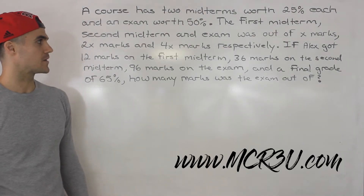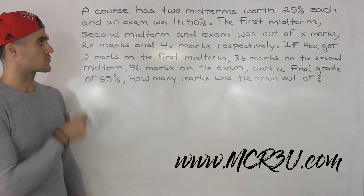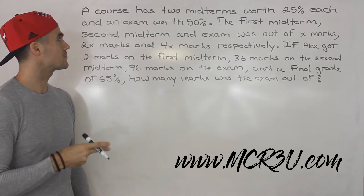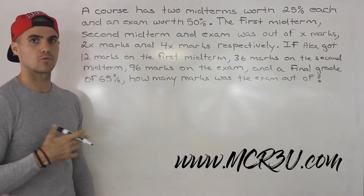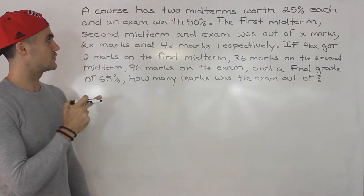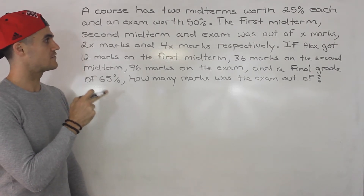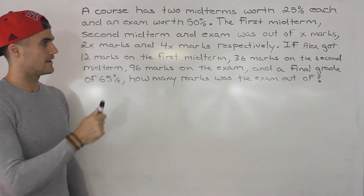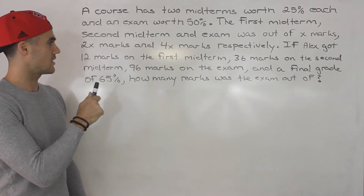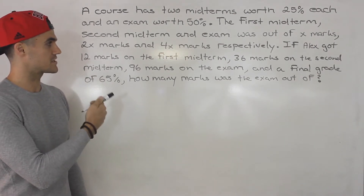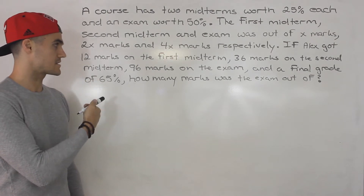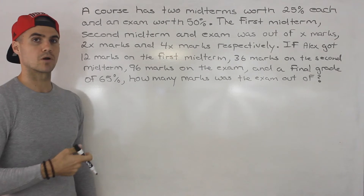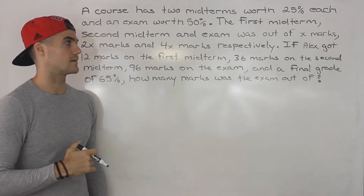Welcome back. Moving on with rational expressions, we have this word problem to solve. A course has two midterms worth 25% each and an exam worth 50%. The first midterm, second midterm, and exam were out of X marks, 2X marks, and 4X marks respectively. Alex got 12 marks on the first midterm, 36 marks on the second, and 96 marks on the exam, with a final grade of 65%. How many marks was the exam out of?